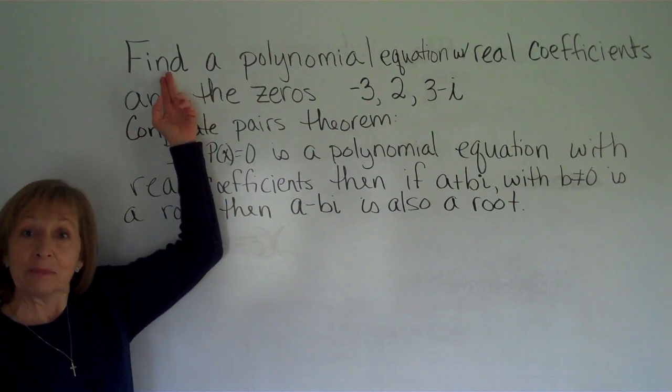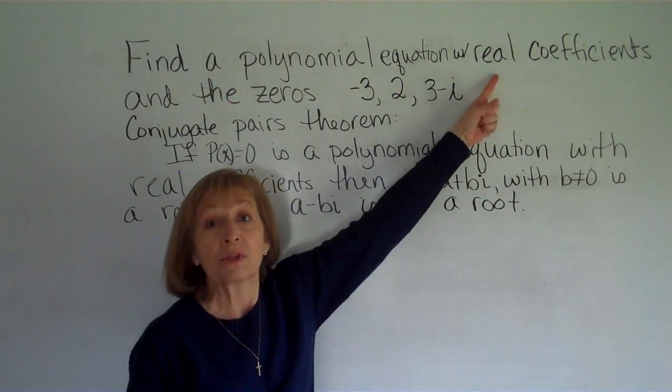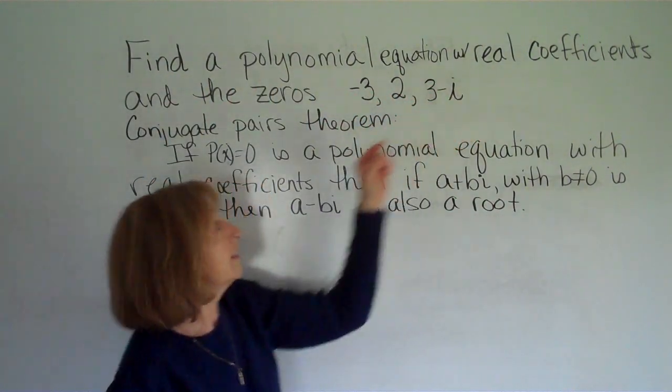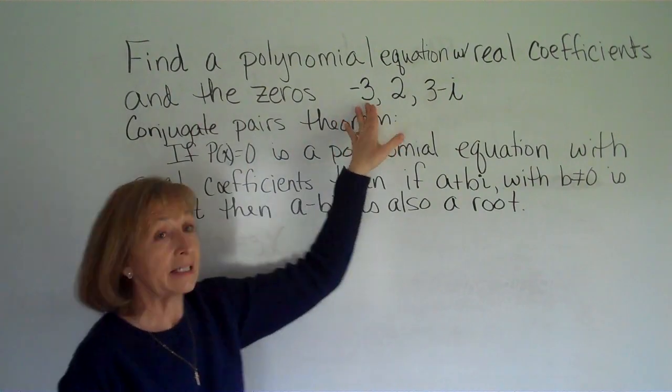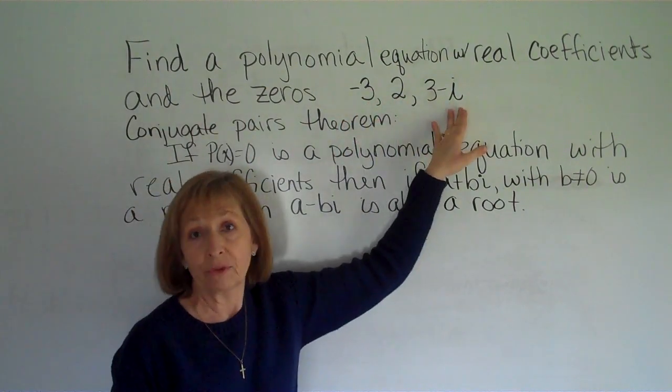Now it asks me in this question to find a polynomial equation with real coefficients and the zeros negative 3, 2, and 3 minus i.